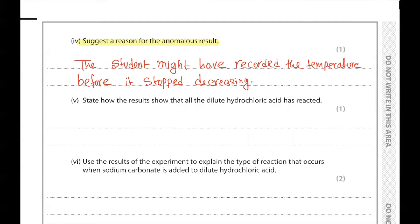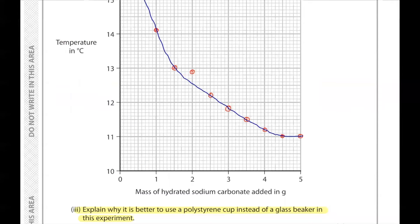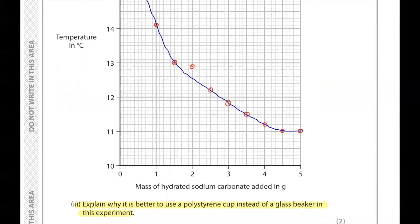Part 5. State how the results show that all the dilute hydrochloric acid has reacted. We can understand all the hydrochloric acid has reacted because the last two results are the same value.